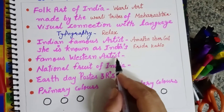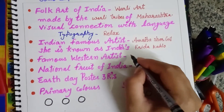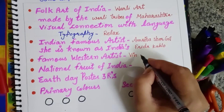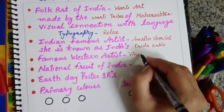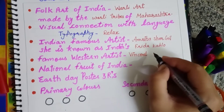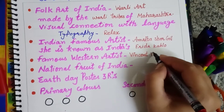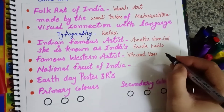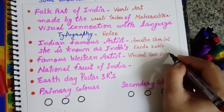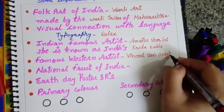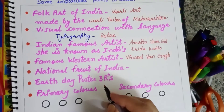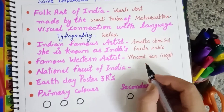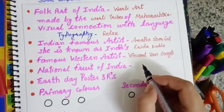Famous Western artists — we were taught and studied. Who worked? Vincent Van Gogh, and there are many artists. We have to learn how to do their work, how to do their paintings. We have seen them in our books.